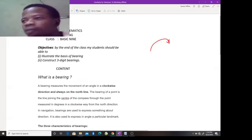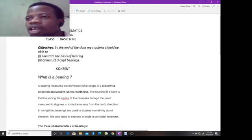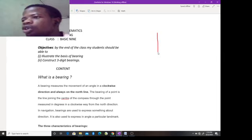Let's take an example of a bearing of 050 or 50 degrees north of east. A bearing of 50 degrees north of east. How do you go? Let's take it this way.